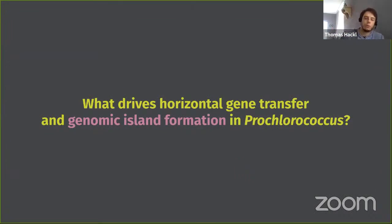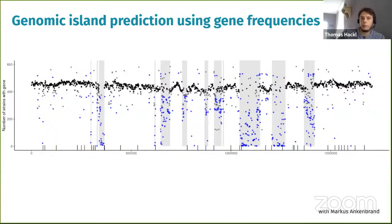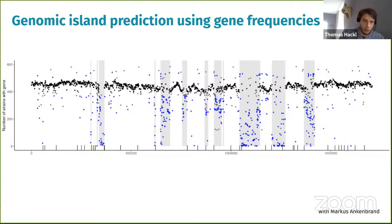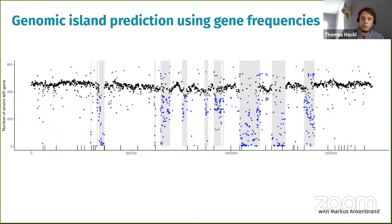So what drives horizontal gene transfer in Prochlorococcus? What drives the formation of these genomic islands where all these genes are concentrated? I started by looking at these islands using 600 genomes. I could ask at every gene location along a genome, how often do I see that gene in my collection of 600? You get a very clear picture of where the islands are — subsets of genes present in around 450 genomes correspond to the core genome, and then there are regions with many genes that are much less abundant, corresponding to genomic islands.